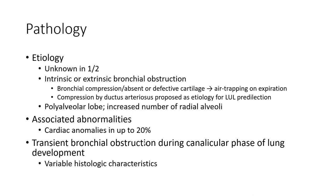Etiology is unknown in most cases. There may be intrinsic or external bronchial obstruction, with only alveolar involvement showing an increased number of alveoli. Associated abnormalities occur in up to 20%, with transient bronchial obstruction during the canalicular phase of lung development implicated.